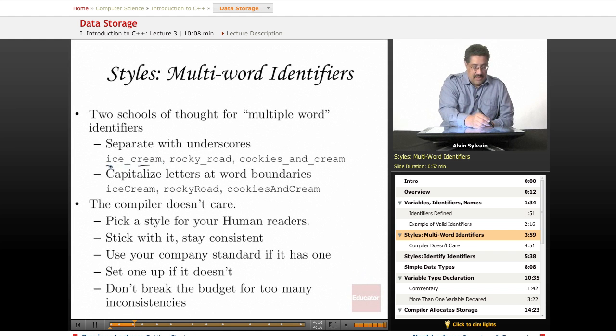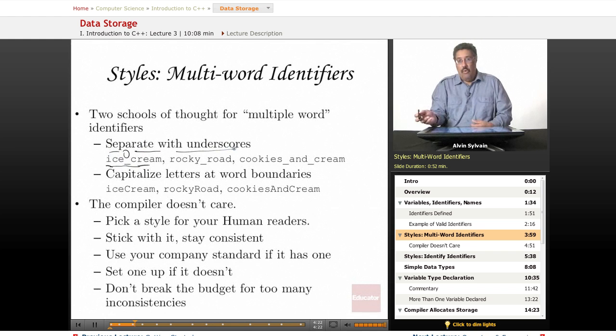Some people like to use the underscore. So we've got ice underscore cream, rocky road, cookies and cream. See, we've got the underscores here separating the words, because this particular variable has some meaning in the system, and it happens to be something with more than one word in it.